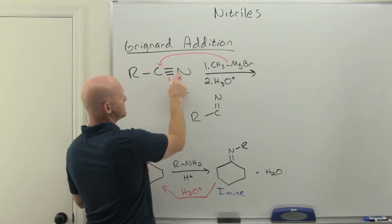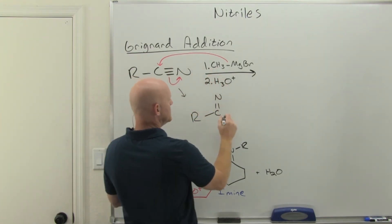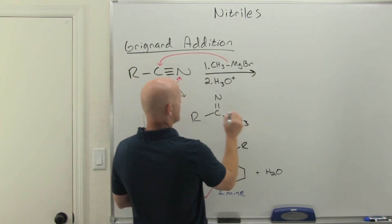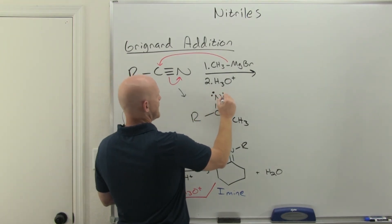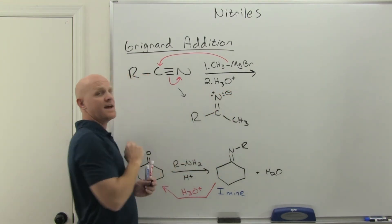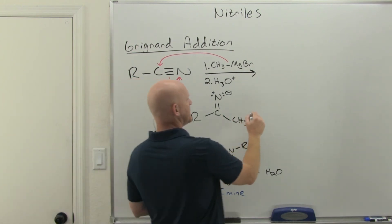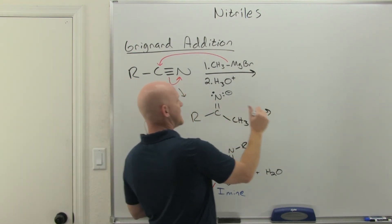We'll end up with a carbon-nitrogen double bond, and then we'll have attached a new carbon, in this case a methyl group. This nitrogen here is going to have a negative charge, and then we're going to add H3O+. That H3O+ is first and foremost going to protonate that nitrogen.